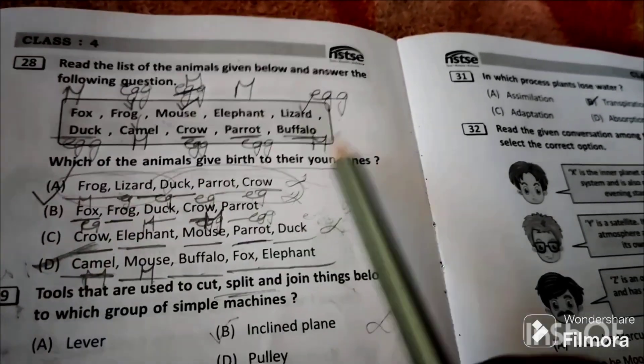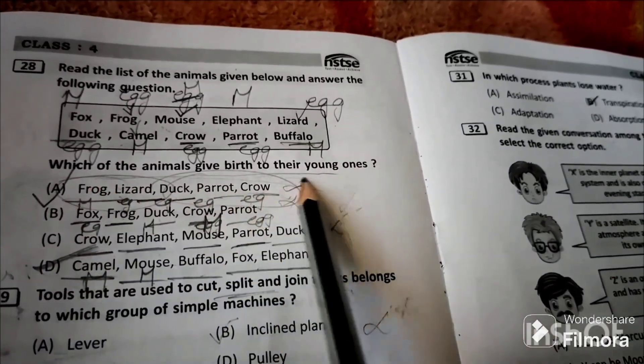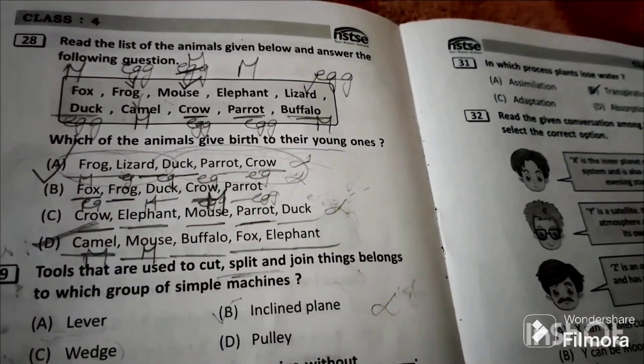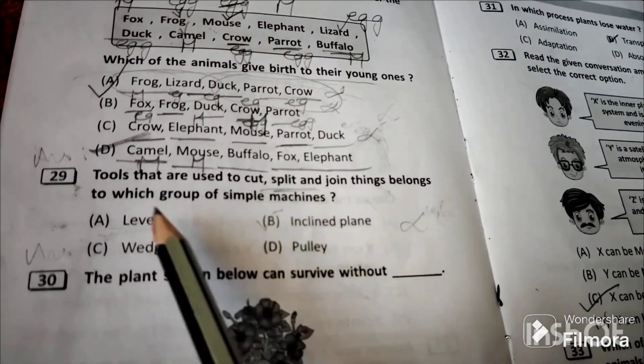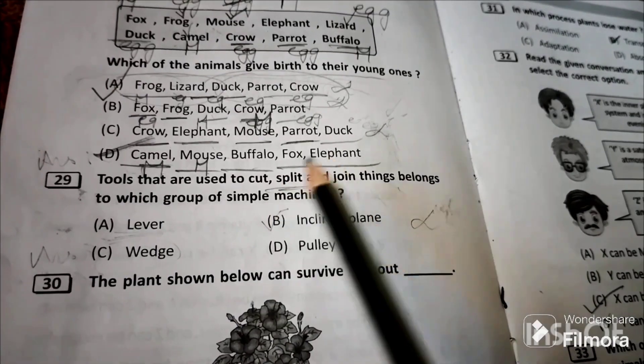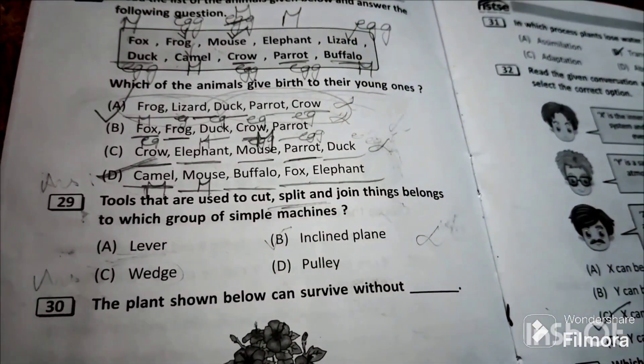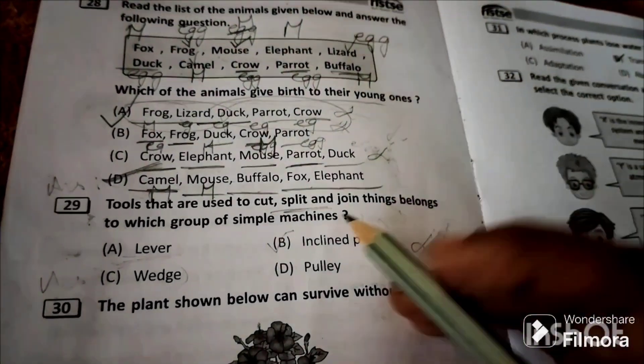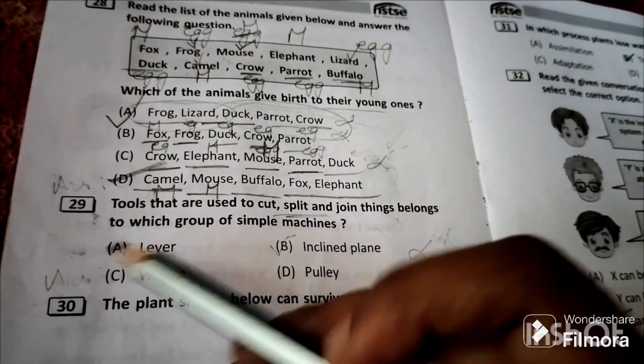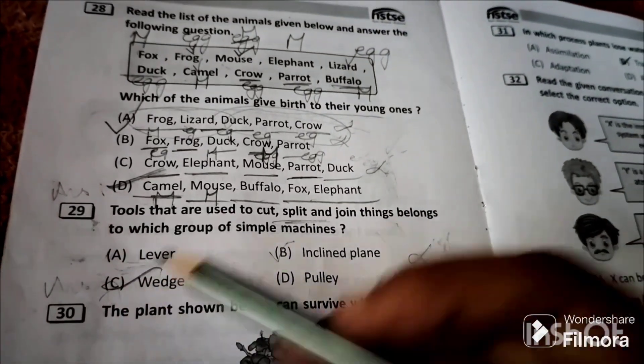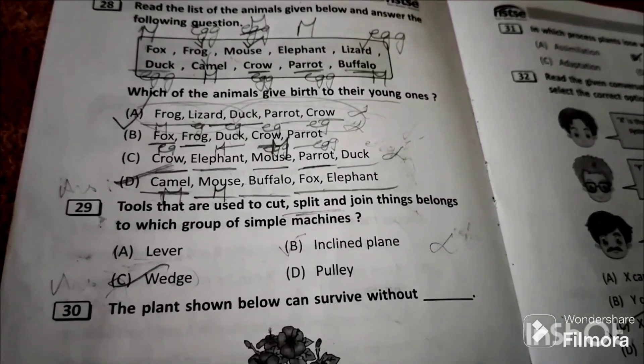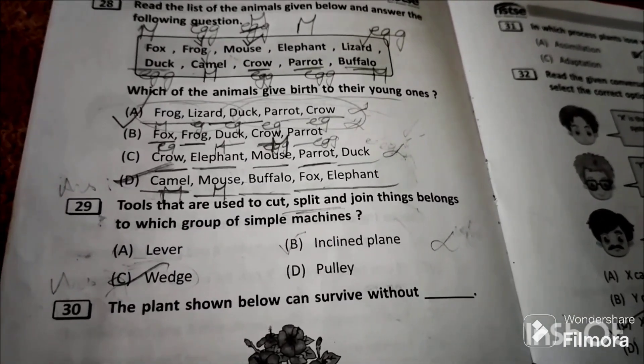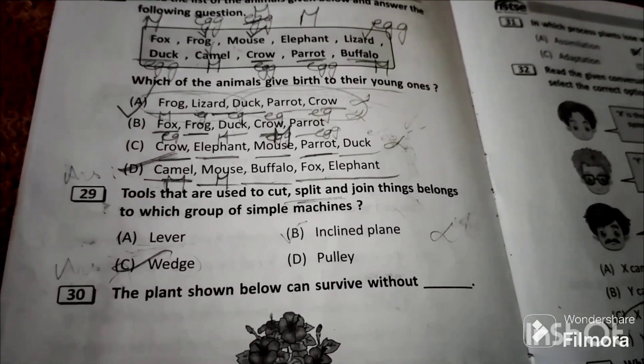Question 29: Tools that are used to cut, split and join things belong to which group of simple machine? Wedge, because wedge is an instrument which has sharp edges. Sharp edges are used to cut, split and join. Example: knife acts like that.